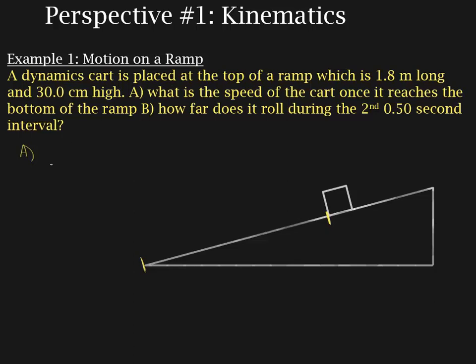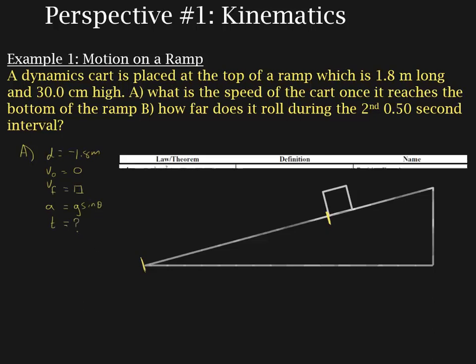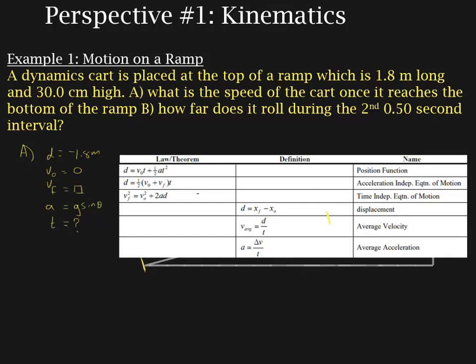In part A, we want to know what the speed is. The first thing we do is draw our diagram. The ramp is 1.8 meters long — that's the distance from where the block starts to the bottom of the ramp. Step two is to list all of our information: D, V-initial, V-final, A, and T. D is negative 1.8 meters. V-initial is zero because it's starting from rest. V-final is what we're looking for. The acceleration is technically unknown but equals G·sin(θ). Time is also unknown. Since two of our three equations involve time and time is not given, the obvious starting point is the time-independent equation of motion.